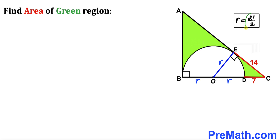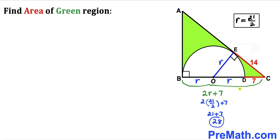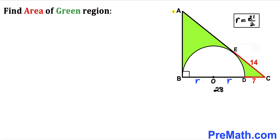The full side length BC equals r + r + 7, which is 2r + 7. Substituting r = 21/2: 2 × (21/2) + 7 = 21 + 7 = 28 units. So BC = 28.